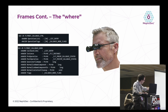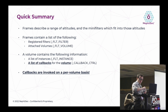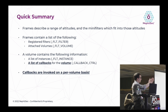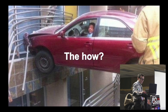So: frames describe a range of altitudes; mini-filters fit into those altitudes; frames contain a list of registered filters and attached volumes; volumes contain a list of instances and a list of callbacks per volume. When I'm patching out target callbacks, I need to be working on a volume — not on an instance or a filter. Now that we've identified the what, we need to identify the how.